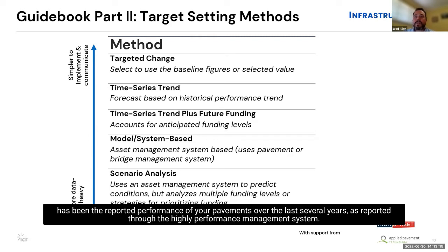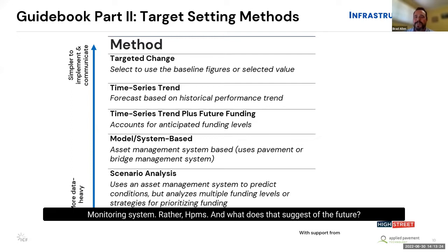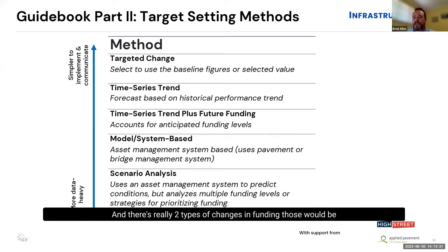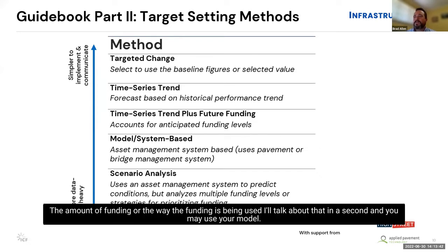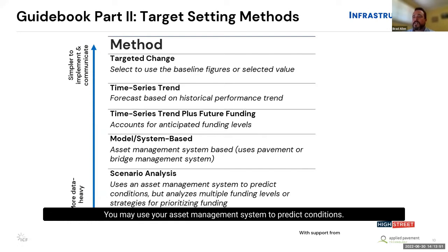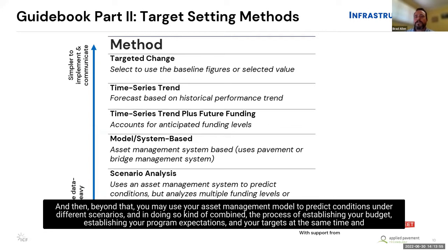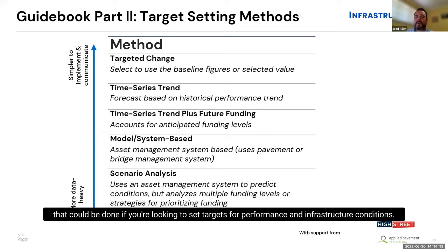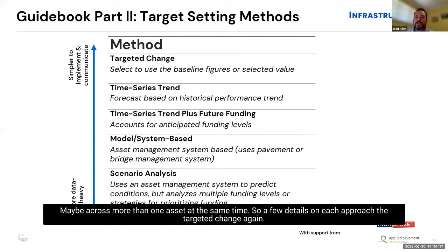A time series trend approach looks at reported performance over the last several years as reported through HPMS and extrapolates that trend forward. Typically agencies modify that trend to account for changes in funding — either the amount of funding or the way it's being used. You may also use your asset management system to predict conditions, or to predict conditions under different scenarios, combining the process of establishing your budget, program expectations, and targets at the same time.